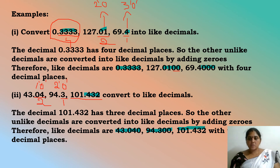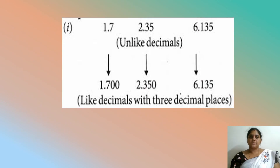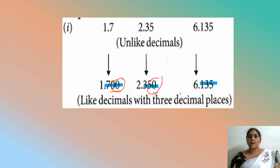This is how we convert unlike decimals to like decimals. Observe the picture: 1.7, 2.35, 6.135. After adding zeros, all have three decimal places — we added two zeros to 1.7 and one zero to 2.35, because the last number already has three decimal places. These were unlike decimals and after converting they became like decimals.